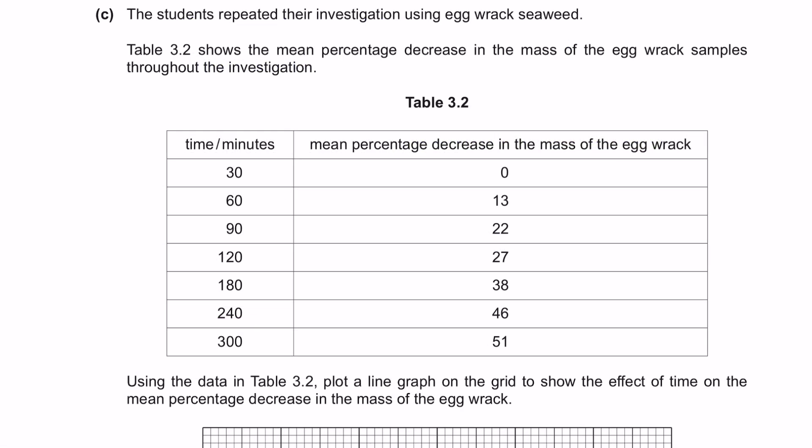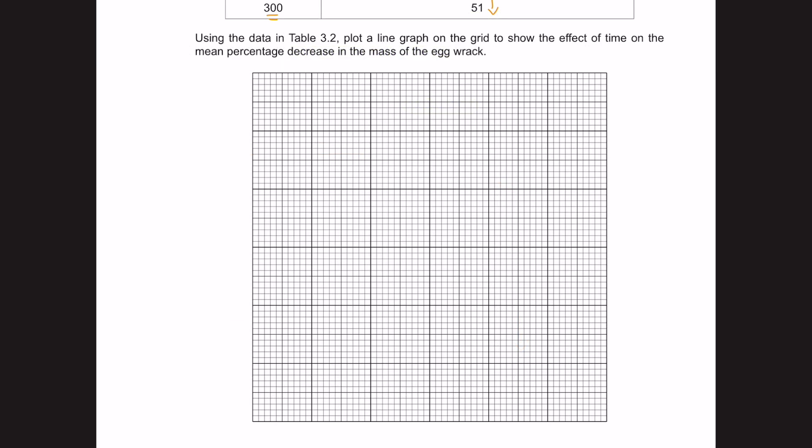Question C. The students repeated their investigation using egg rack seaweed. Table 3.2 shows the mean percentage decrease in the mass of the egg rack samples throughout the investigation. So in this column, we've got the time in minutes from 30 to 300 minutes and the mean percentage decrease from 0 until 51. Using the data in table 3.2, plot a line graph on the grid to show the effect of time on the mean percentage decrease in the mass of the egg rack.